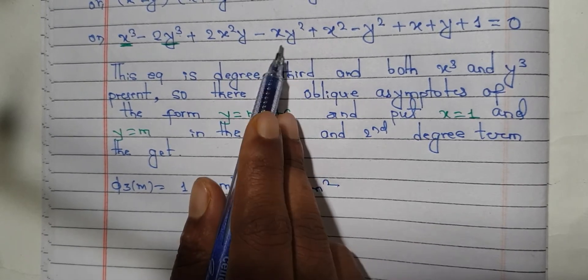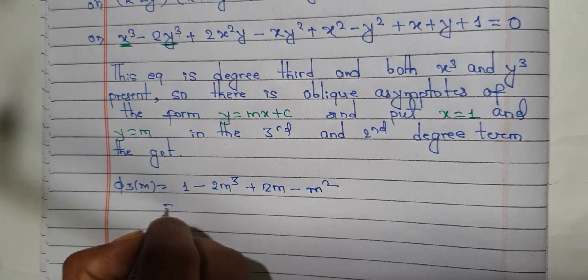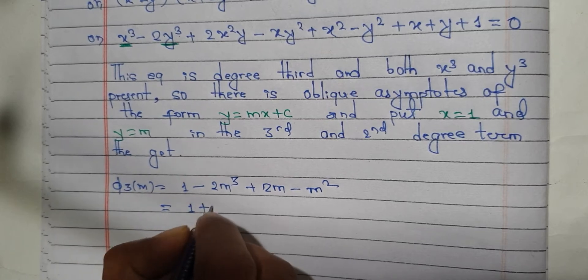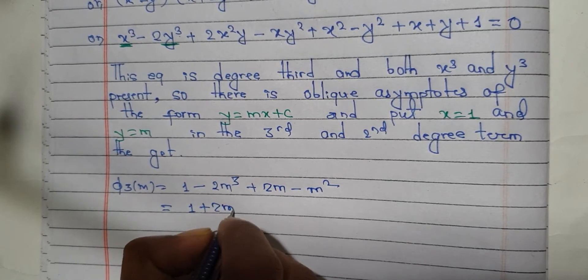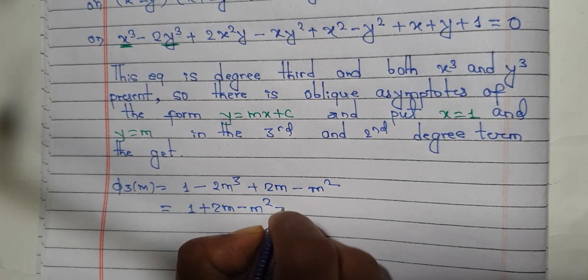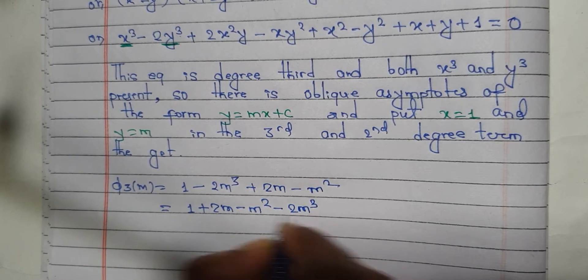So we get: 1 plus 2m minus m squared minus 2m cubed.